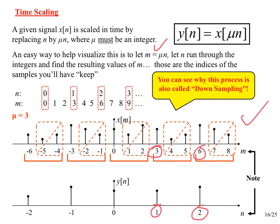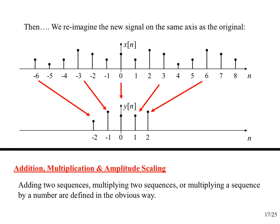This process is called down sampling or decimation. Out of every three samples of X, two are thrown away. You may study this in more advanced signal processing courses. Once you do the decimation, you can reimagine the new signal on the original axis — it looks squished together but remember certain samples have been removed. As for adding, multiplying, and amplitude scaling of signals — that's pretty obvious; read through the text for coverage.